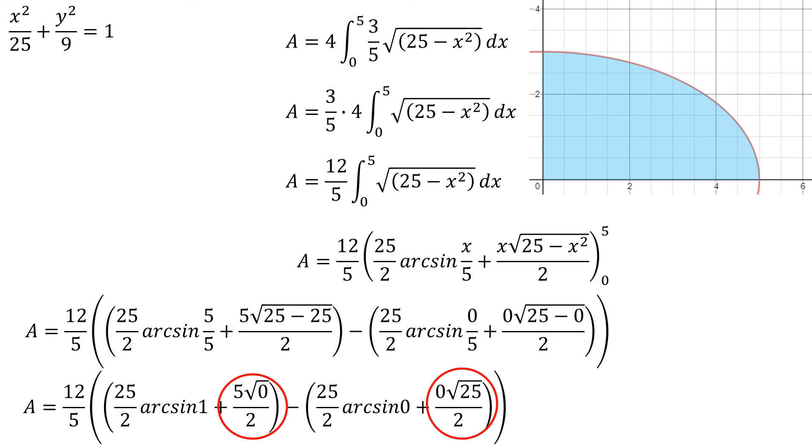0 times the square root of 25, of course, is just going to become 0. That's of no concern to me. And of course, an arc that gets me a sine with a value of 0. That's 0, right? When is sine of angle theta equal to 0? When the angle is 0. So that's gone.